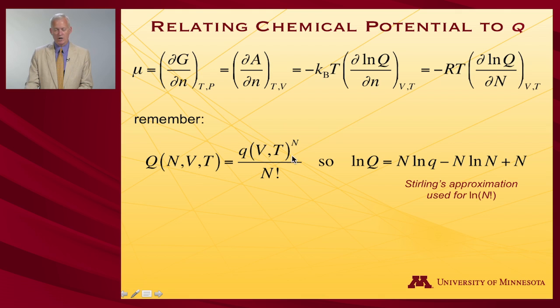So the logarithm of the system partition function then, if I take the log of this quantity and I play the usual games with logs of powers and logs of quotients and the like, I'll get n log Q for what's in the numerator. And applying Stirling's approximation for the log of n factorial, I'll get minus n log n plus n.